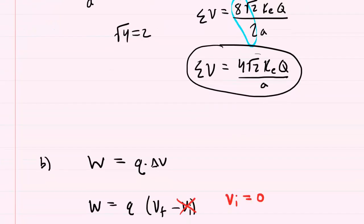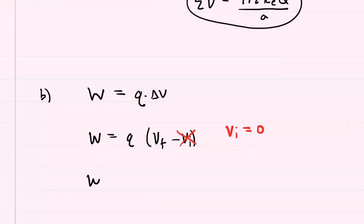So part B becomes relatively straightforward because we simply have to multiply lowercase q by the expression for the potential we derived in part A. And there isn't too much you can do to simplify this.